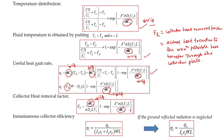Finally, we can find the instantaneous collector efficiency, which is useful heat gain divided by the amount of radiation falling on the receiver: η = qU / (IbRb · W · L), neglecting the ground-reflected radiation component. This is how we calculate the instantaneous efficiency of a parabolic trough.